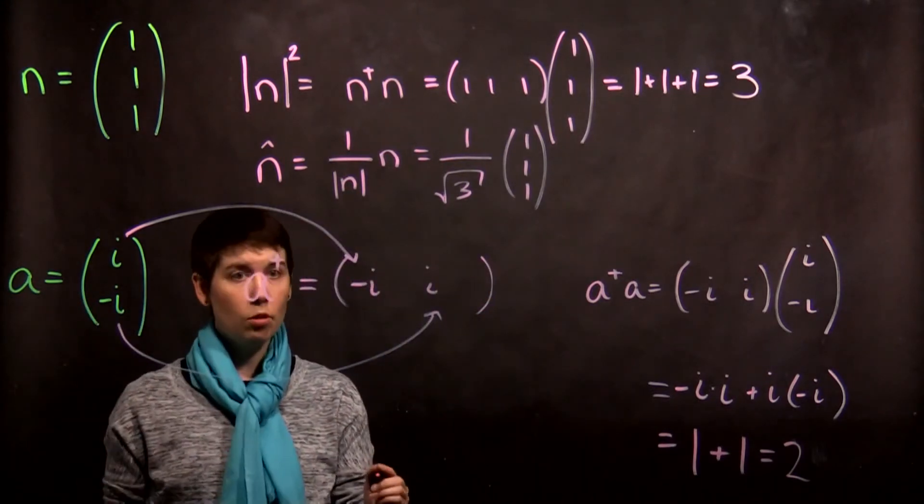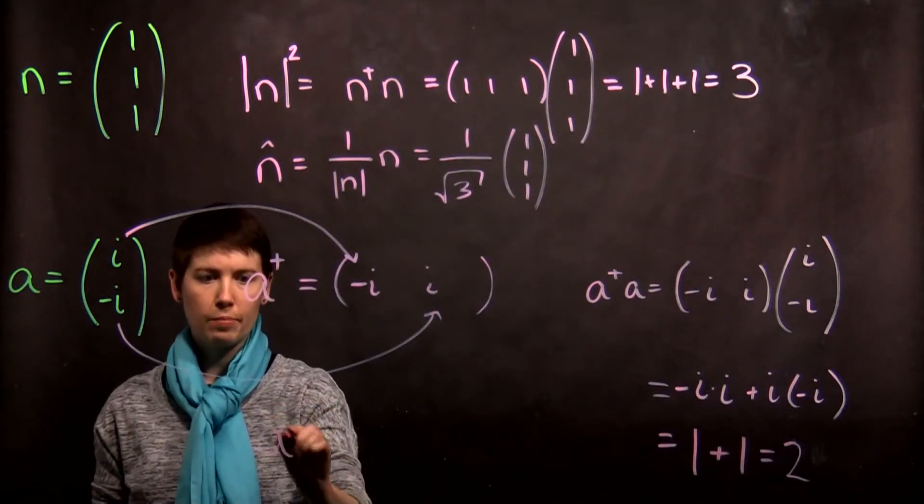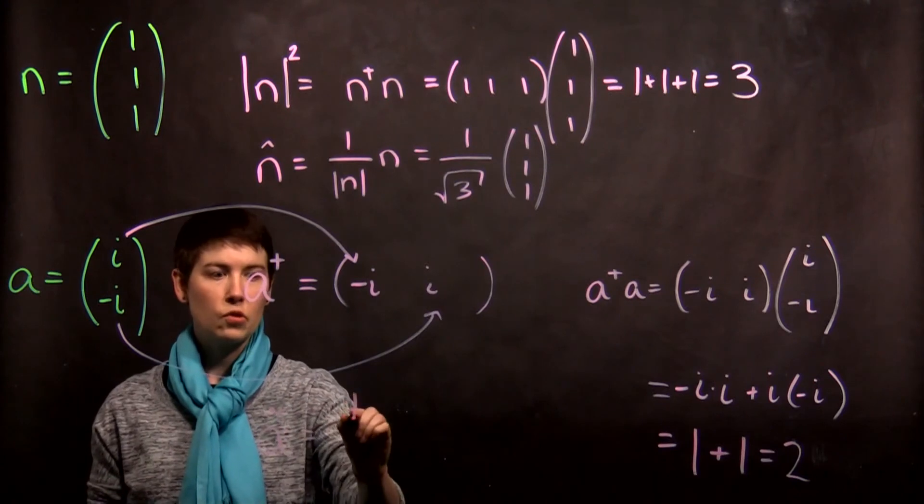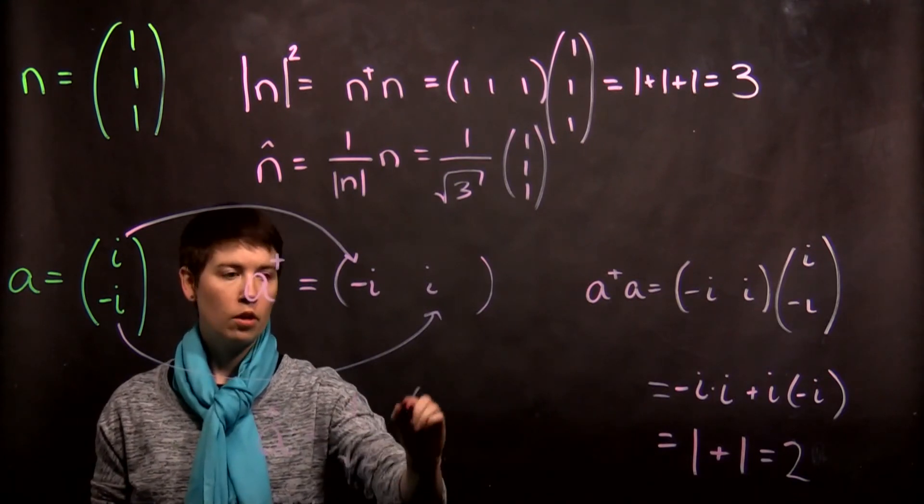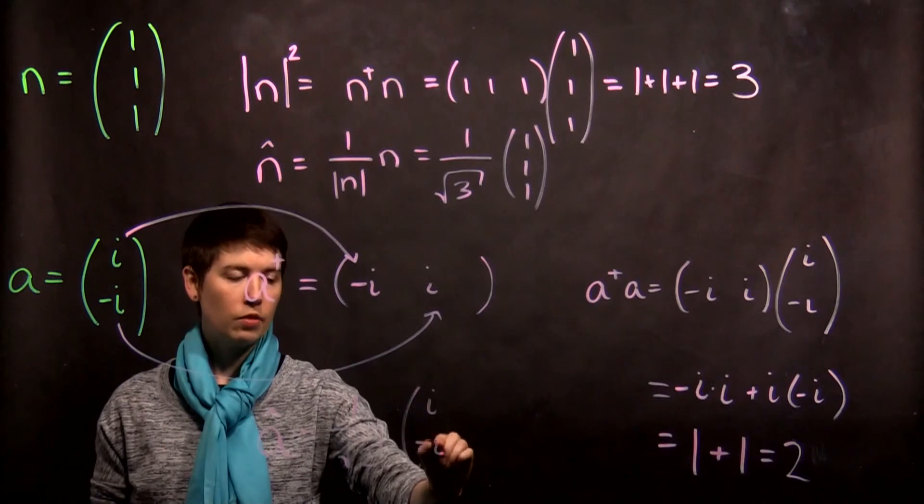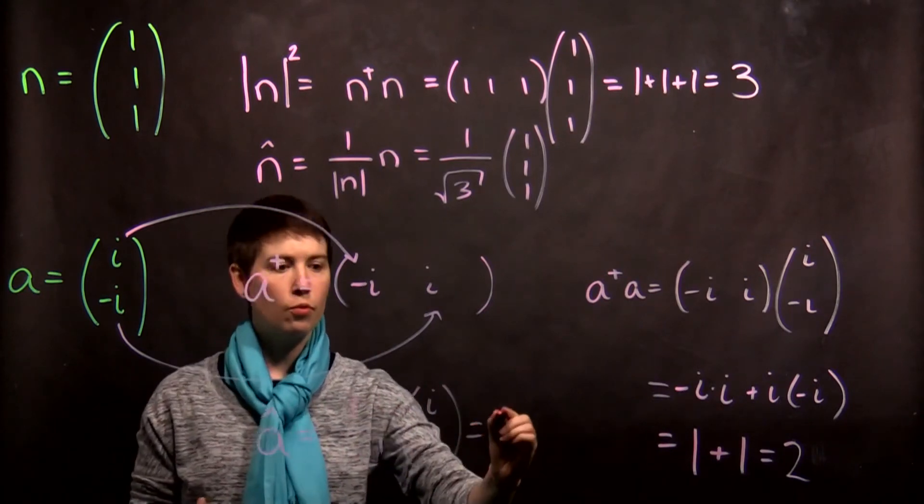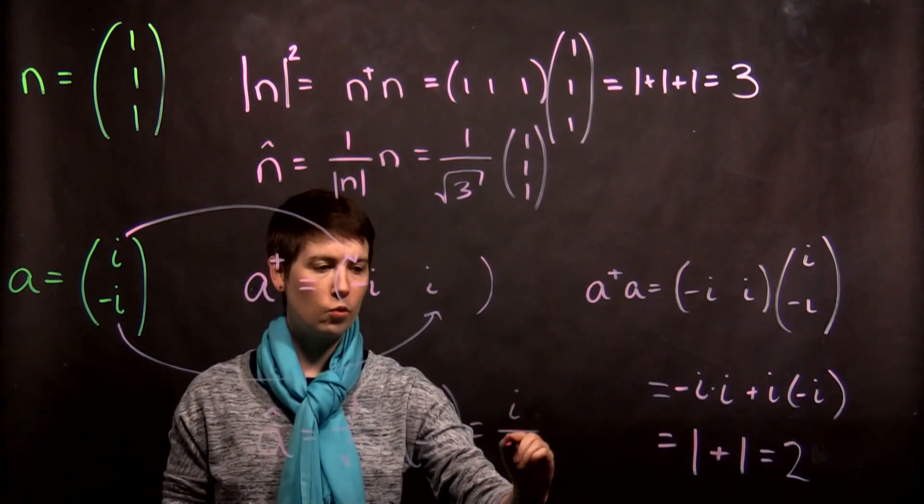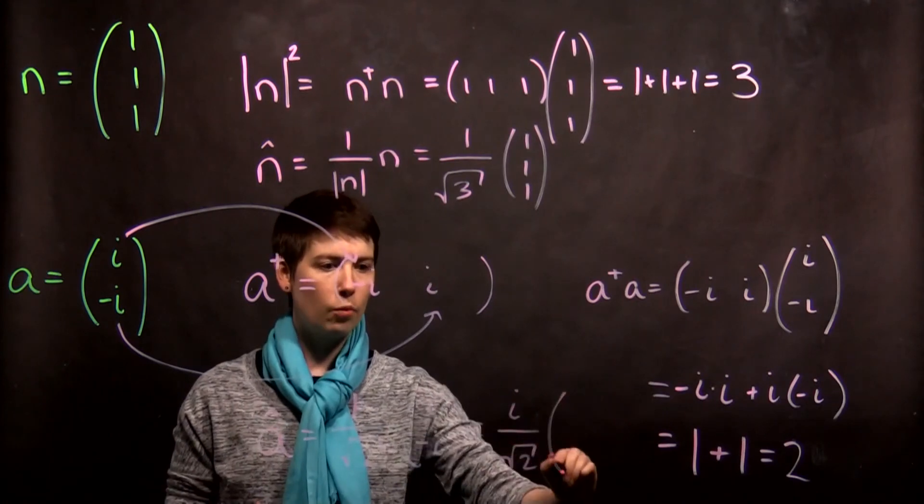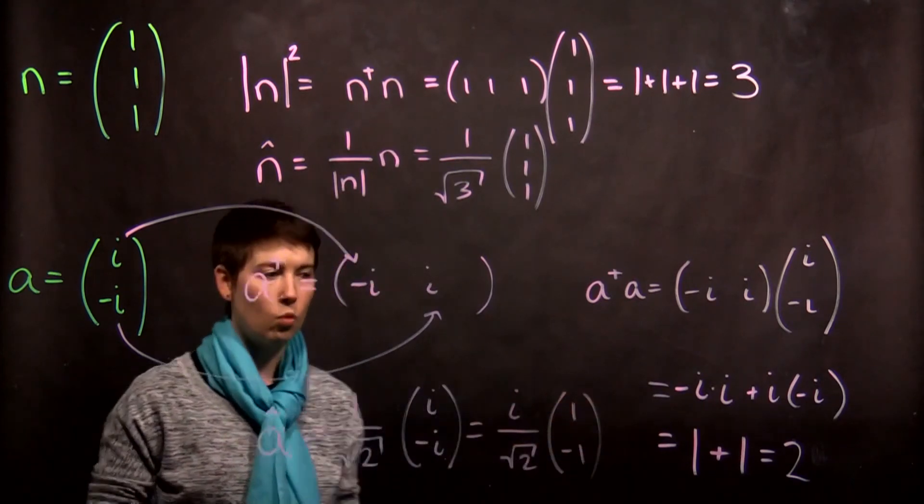So, in order to normalize this, if I want my normalized a vector, this is one over the square root of two, times i and negative i. If you wanted to, you could write this as i over the square root of two, and then what we have left on the inside is one and negative one.